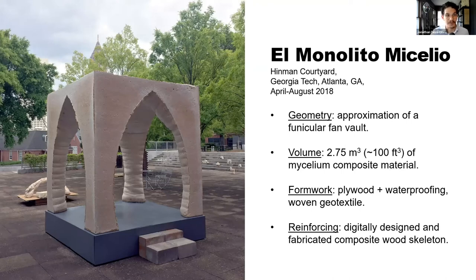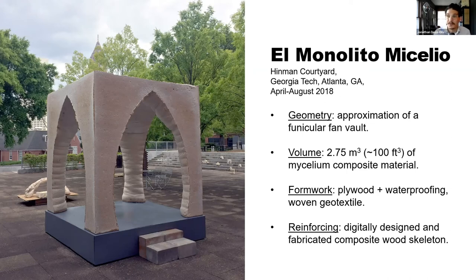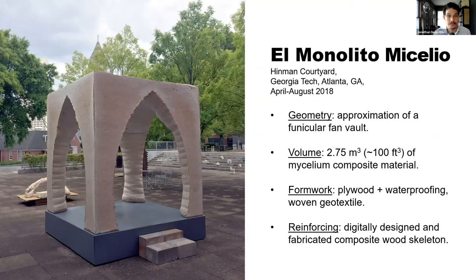This notion of very large quantities of mycelium coming together in single colonies — extreme castings — there wasn't much out there. This structure was grown in April 2018 and stood until August — a temporary structure by design, meant to be cut up and thrown away. The pavilion geometry is an approximation of a funicular fan vault. The volume consists of about two and three-quarter cubic meters or almost 100 cubic feet of mycelium composite material — inoculated hemp. The formwork consisted of plywood, waterproofing, and woven geotextile, and the reinforcing was a digitally designed and fabricated composite wood skeleton.